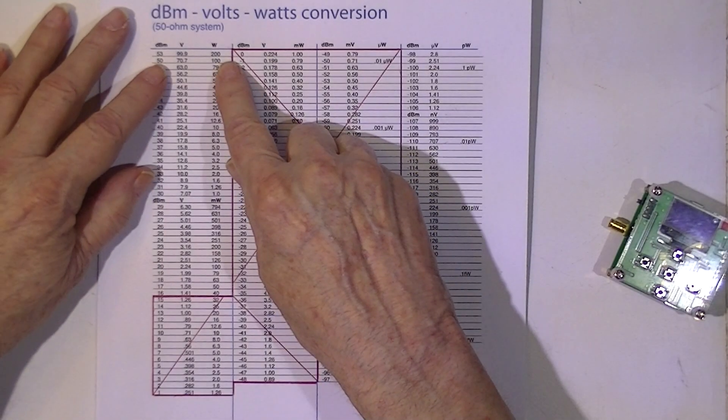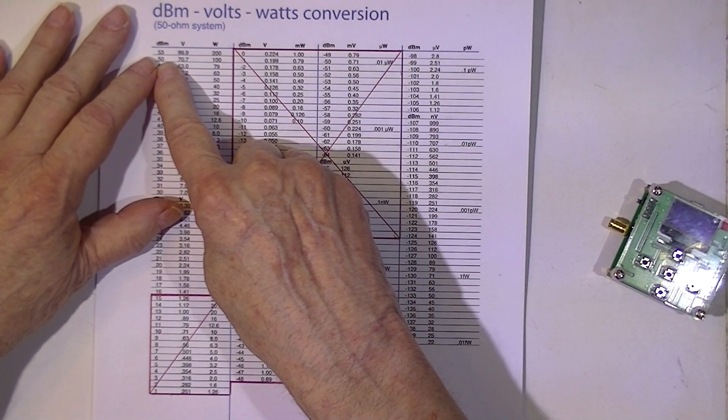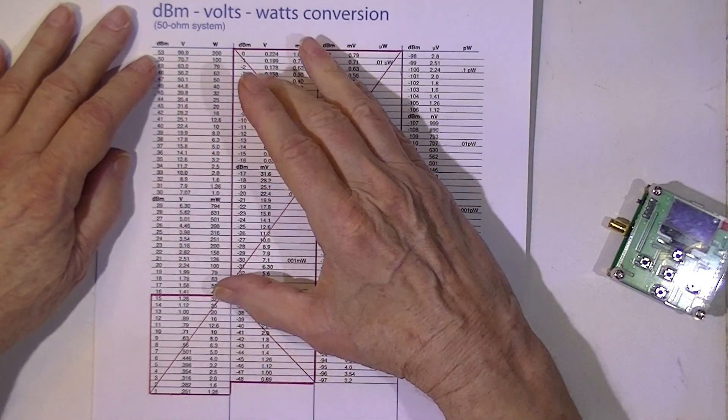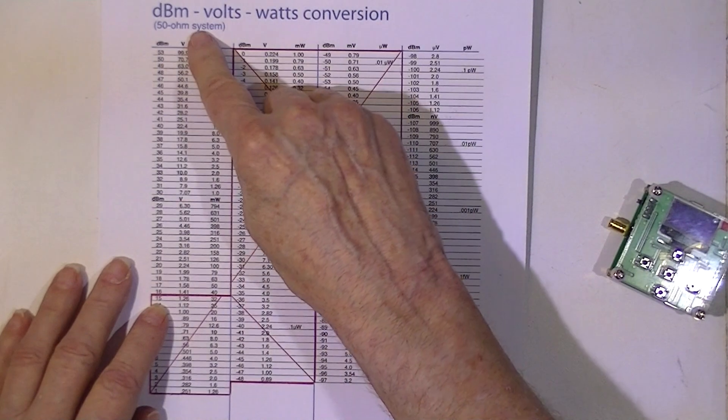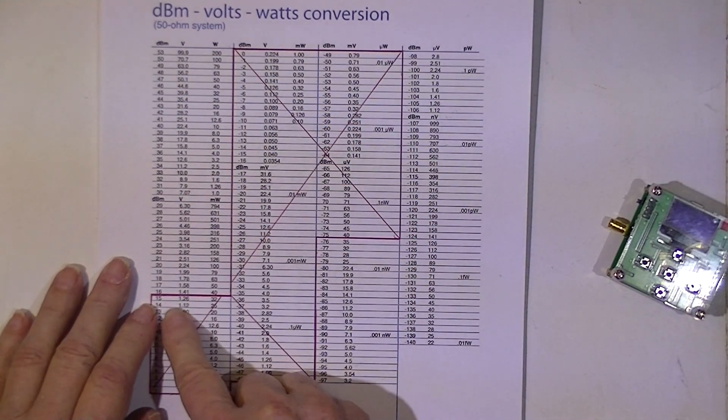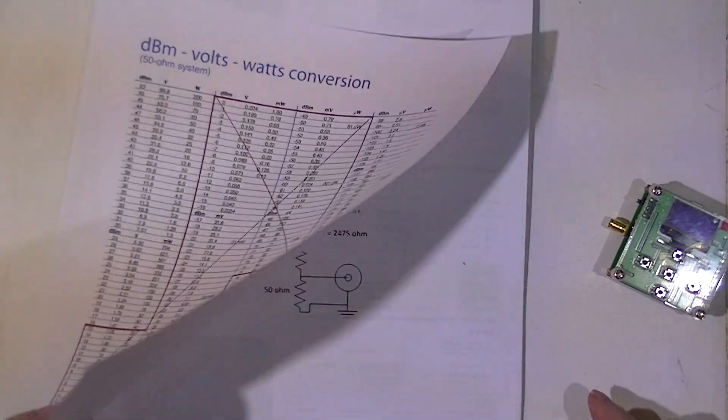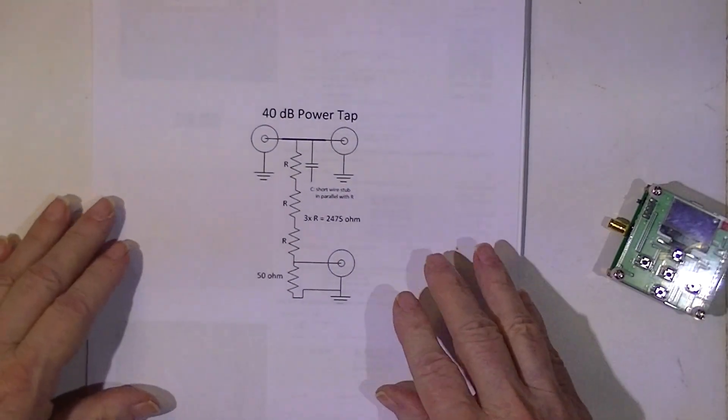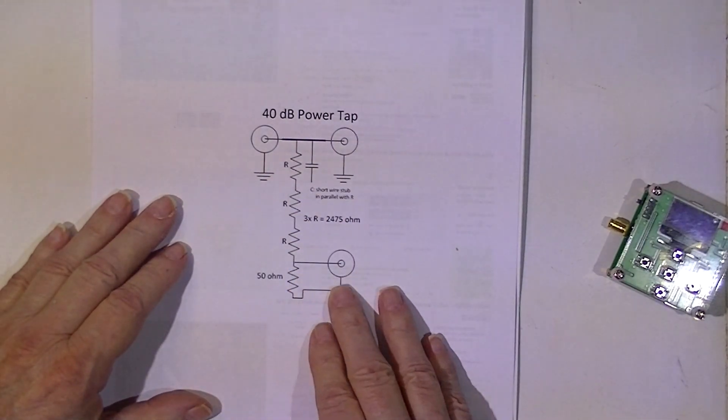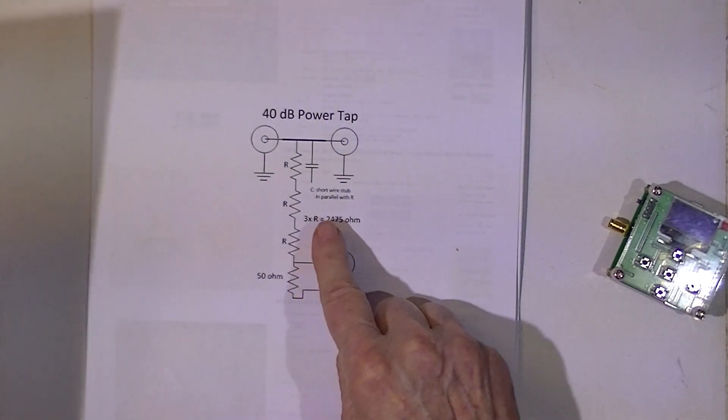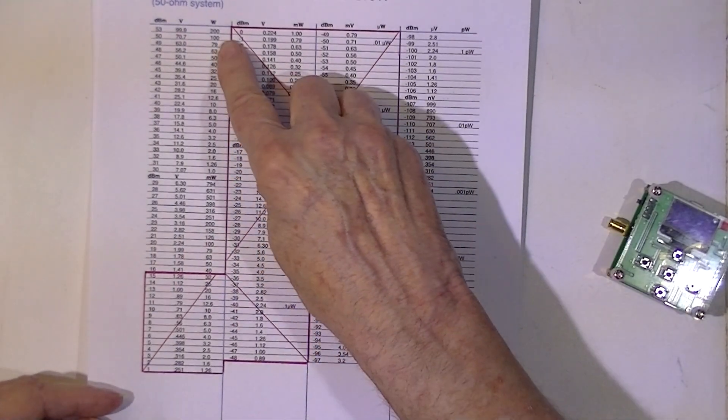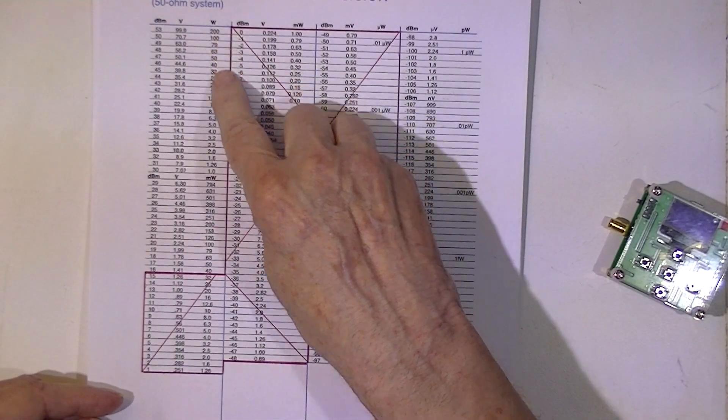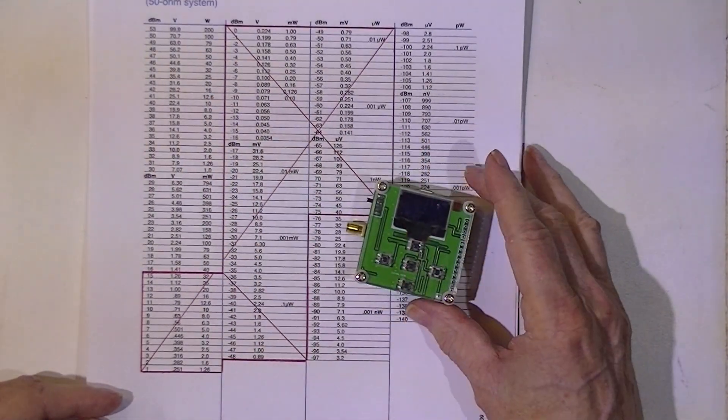200 watts is 53 dBm. If I had a 40 dB attenuator, I would be able to take 55 dBm of power and attenuate it down to 15 dBm. So I've selected a 40 dBm power tap. 40 dBm of attenuation will allow me to read 400 watts maximum on this little OLED power meter.